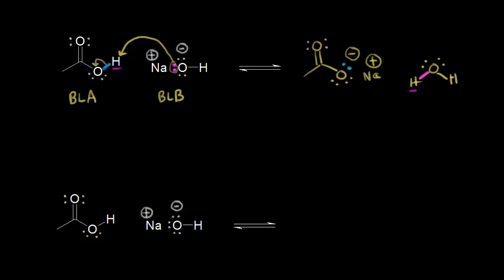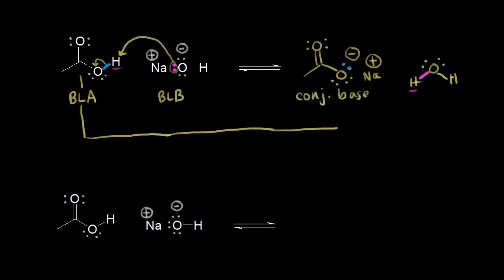We could even identify conjugate acid-base pairs here. On the left, this was acetic acid — our Bronsted-Lowry acid. The conjugate base to acetic acid would be over here: just take away a proton, and this would be the conjugate base — the acetate anion.